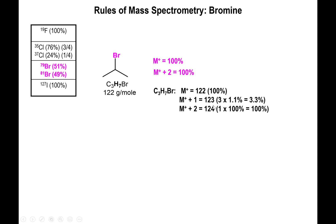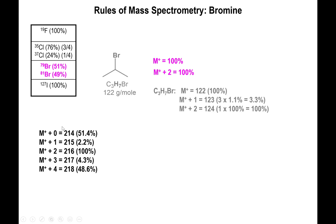For bromine: similar idea — M+, M+1, and M+2 peaks, since bromine isotopes differ by two mass units. M+1 is again about carbon — three carbons gives 3.3%. The M+2 peak is all about bromine, and with one bromine you get roughly the same percentage abundance as the M+ peak itself. For a given spectrum, you might see M+ at 214 at 51.4%, M+1 at 2.2%, and M+2 at 100%.